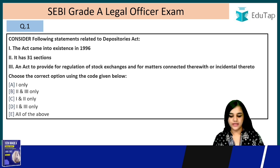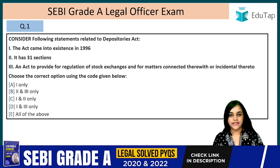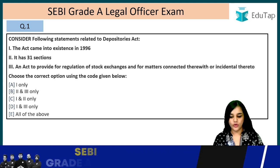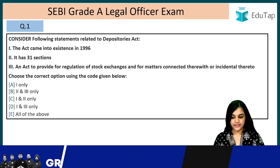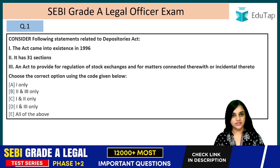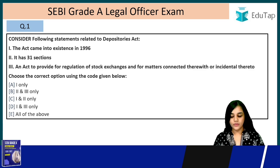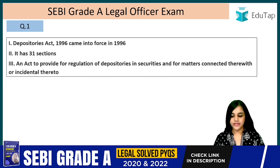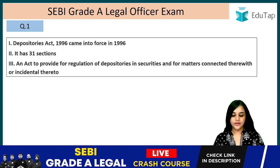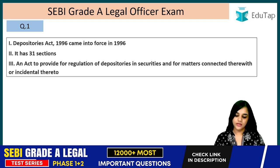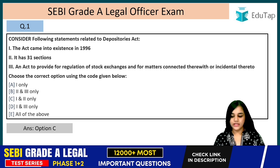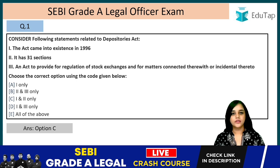Question 1: Consider the following statements related to the Depositories Act. Statement 1 — the Act came into existence in 1996. Statement 2 — it has 31 sections. Statement 3 — it is an Act to provide for regulation of stock exchanges and for matters connected therewith. The first and second are correct. The Act came into existence in 1996 — correct. It has 31 sections — correct. But the third is not correct. The correct preamble reads: an Act to provide for regulation of depositories in securities, not stock exchanges. The answer is option C — only one and two are correct.